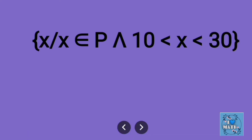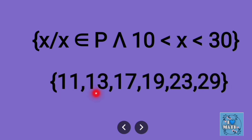Next example: { x | x ∈ P, 10 < x < 30 }. This represents prime numbers in between 10 and 30. The prime numbers are 11, 13, 17, 19, 23, 29.